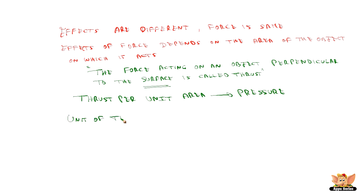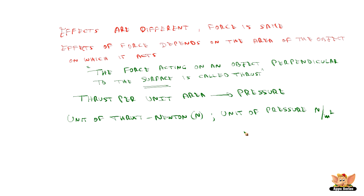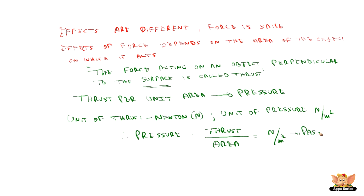The unit of thrust is Newton, represented as N. The unit of pressure is Newton per meter square, because pressure equals thrust divided by area. This unit is also called Pascal, as an honor to the great scientist Pascal, and it is represented as Pa.